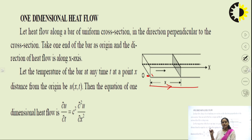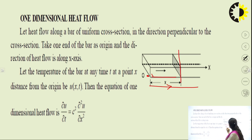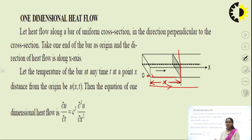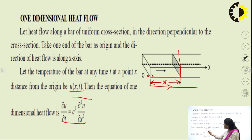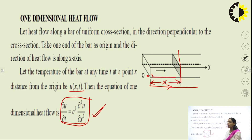Let the temperature of the bar at any time t and at any point x, where x is the distance. The temperature at point x at any time t can be written as u(x, t), because temperature becomes a function of distance and time. Then the equation of one-dimensional heat flow is: ∂u/∂t = ∂²u/∂x². This is the heat equation for one dimension.